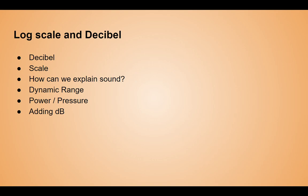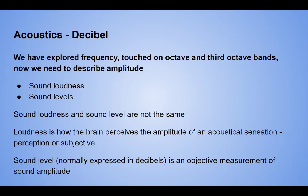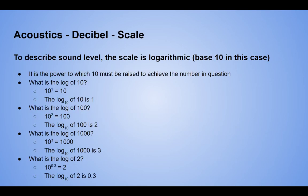We're going to go over the decibel scale, revisit how we explain sound now that we understand what the decibel scale is, look at dynamic range, examine power and pressure and where we'd use those, and then add some dB levels together. We left off with sound loudness and sound levels — loudness is perception, level is measurement, both describing amplitude. When describing level, we use a logarithmic scale, base 10. It is the power to which 10 is raised: 10 to the 1 is 10, 10 to the 2 is 100, 10 to the 3 is 1000.